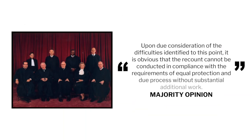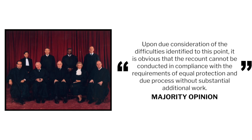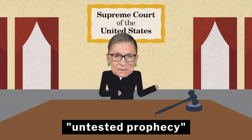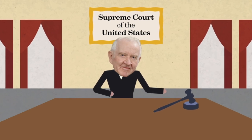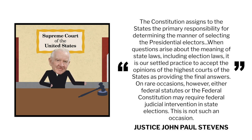The majority stated: 'Upon due consideration of the difficulties identified to this point, it is obvious that the recount cannot be conducted in compliance with the requirements of equal protection and due process without substantial additional work.' Not all the justices were convinced. Justice Ruth Bader Ginsburg argued the majority was making an untested prophecy when it claimed a new legal process could not be adopted before December 29th when Congress would ratify the Electoral College vote. In a separate dissent, Justice John Paul Stevens argued the majority violated the principle of federalism, writing that the Constitution assigns to the states the primary responsibility for determining the manner of selecting the presidential electors, and that when questions arise about state laws, including election laws, it is settled practice to accept the opinions of the highest courts of the states as providing the final answers. He concluded: 'This is not such an occasion.'